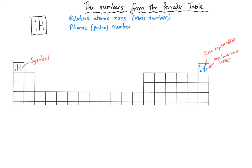The smaller of the two numbers — usually the bottom number — is called the atomic number, or sometimes the proton number. Very literally, the atomic number tells us the number of protons in a particular atom. For hydrogen, it's got the atomic number of 1, which means it's got one proton. The mass number — or more formally the relative atomic mass — is the top number in the periodic table. It tells you how many things there are in the atom that have got mass, which is the number of protons added to the number of neutrons. For hydrogen, the number of protons plus neutrons equals 1.